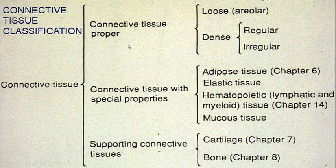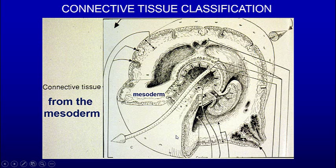Connective tissue is composed of different things. Today we're going to talk about connective tissue proper, which is loose and dense — dense can be regular or irregular. Next time we're going to talk about cartilage and bone.